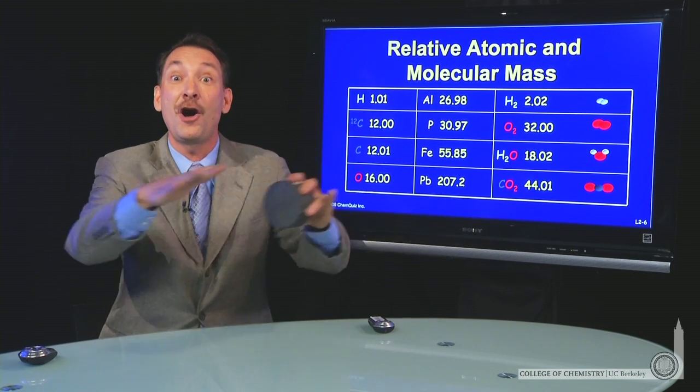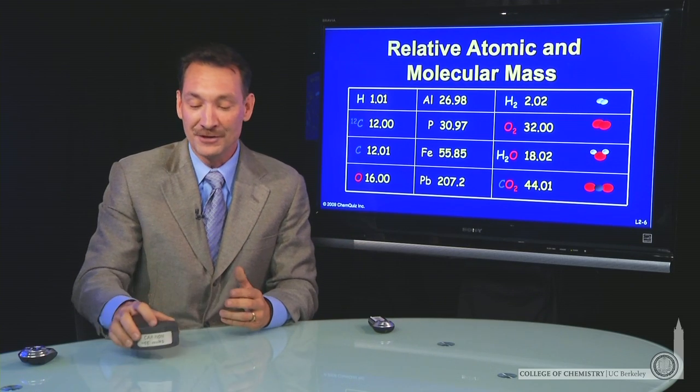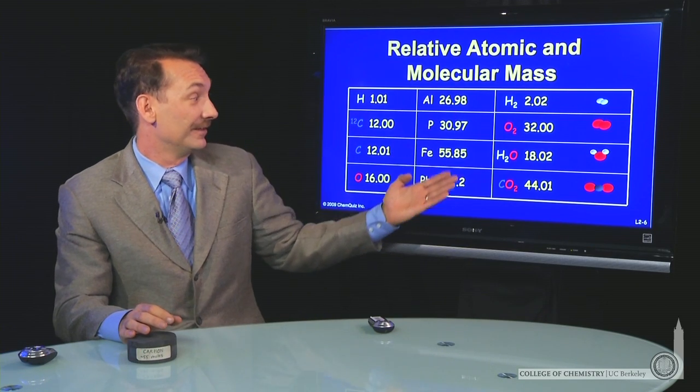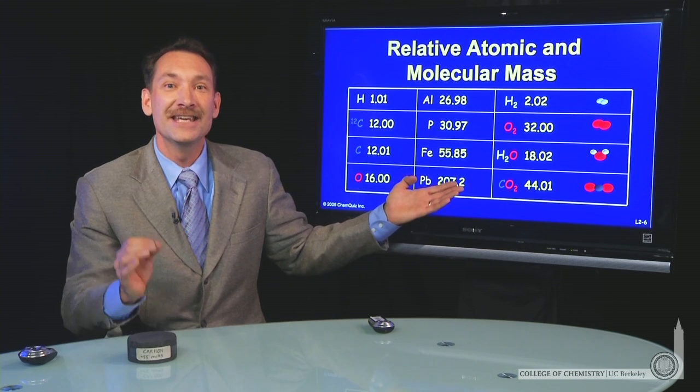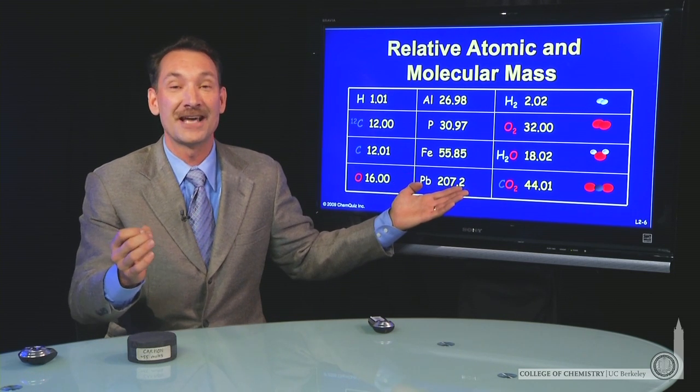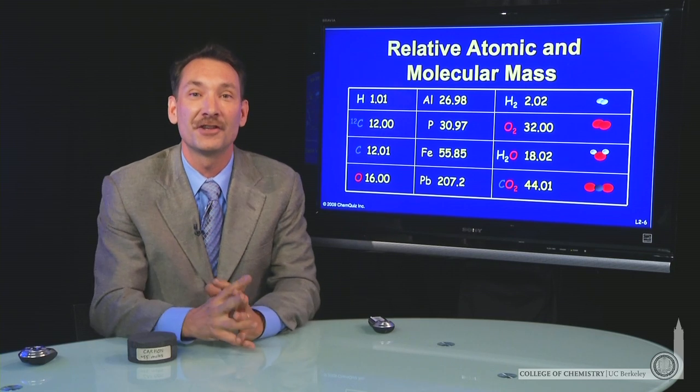It's the mass weighted average of all the isotopes. And you can see many elements have a potpourri of different isotopes. They don't have integer molecular masses and atomic masses because of the presence of all the different isotopes.